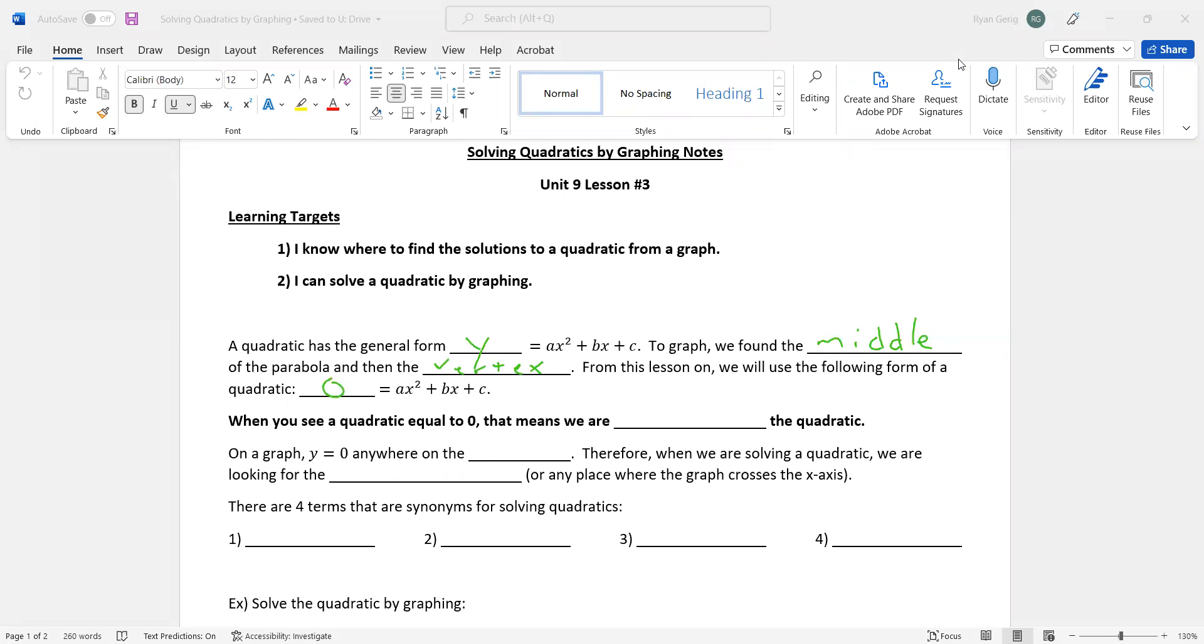When you see a quadratic equal to zero, that means we are solving the quadratic. What x value will give me zero for y? On a graph, y equals zero anywhere on the x-axis. That's the horizontal axis. Therefore, when we are solving a quadratic, we are looking for the x-intercepts. That's any place where the graph crosses the x-axis.